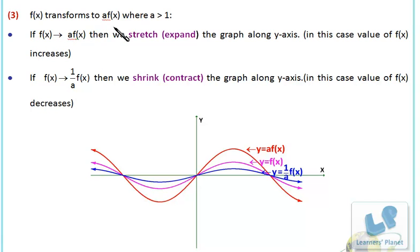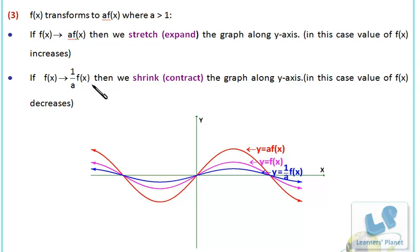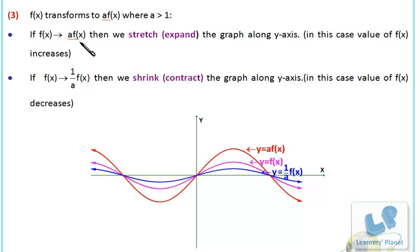Now let's see when f(x) transforms to a·f(x), where a is greater than 1. If f(x) transforms to a·f(x), then we stretch or expand the graph along the y-axis. When f(x) is transformed to (1/a)·f(x), then we shrink the graph along the y-axis. The value of f(x) decreases when divided by a, and increases when multiplied by a, since a is greater than 1.